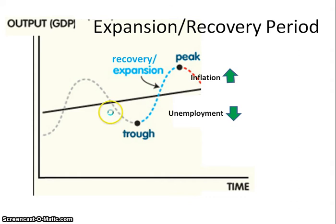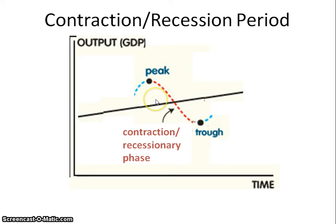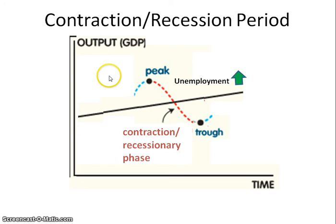After going up through the expansionary recovery and hitting the peak, what goes up must come down — you then get into the contraction or recessionary phase. In this contractionary phase, GDP is going down because negative GDP is happening. We're not necessarily saying we're in a recession unless it has been two consecutive quarters, or six months, of negative GDP. It's just that GDP is going down — it's negative, it's decreasing. That means our final goods and services aren't being produced as much. Businesses are laying off people because final goods and services aren't being demanded, resulting in an increase in unemployment. Again, there is an opposite relationship between GDP and unemployment.